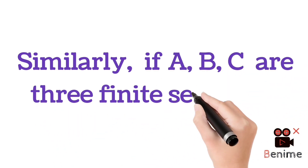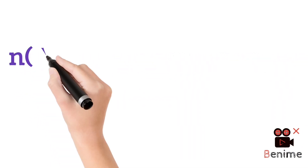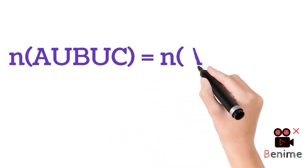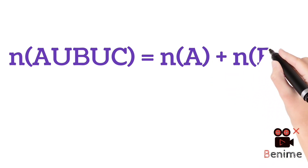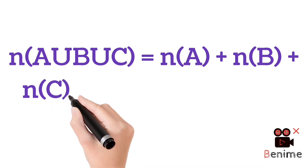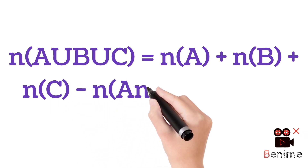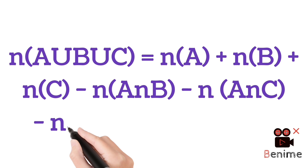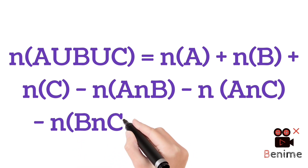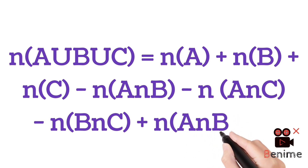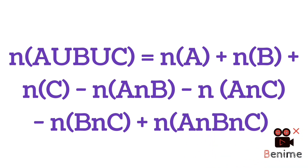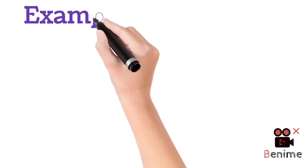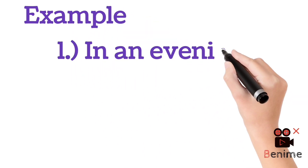Similarly, if A, B and C are three finite sets, then the number of elements in A union B union C is equal to N of A plus N of B plus N of C minus N of A intersect B minus N of A intersect C minus N of B intersect C plus N of A intersect B intersect C. We shall use these relations to solve some examples on the applications of set theory.